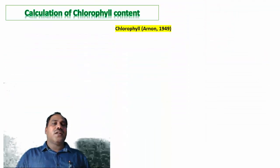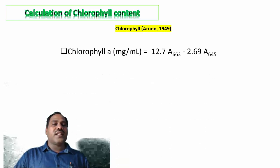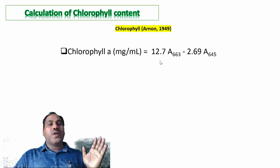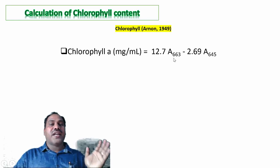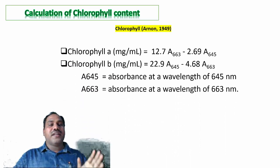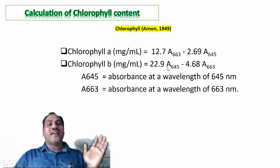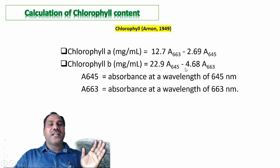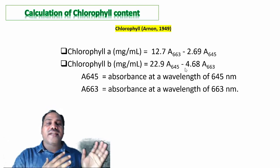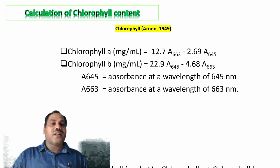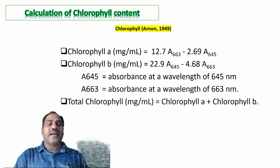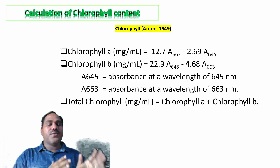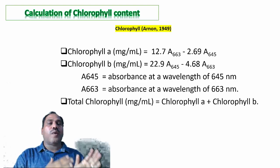All operations are performed under dim green light at 0 to 4 degrees centigrade. The concentration of chlorophyll is calculated using the Arnon equations: Chlorophyll a = 12.7 × A663 − 2.69 × A645, and Chlorophyll b = 22.9 × A645 (minus respective correction). Total chlorophyll content is calculated as the sum of chlorophyll a and chlorophyll b, allowing comparison between samples.